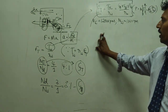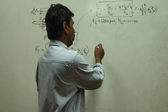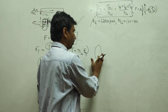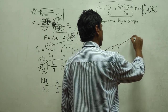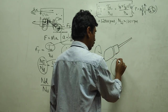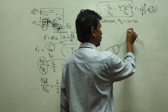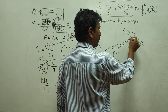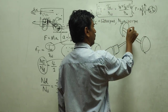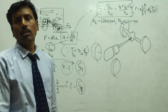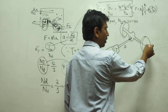Let me draw a driveline diagram. We have the engine, then the clutch, then the gearbox, then the driveline (drive shaft), and here is the differential. From the differential, one half shaft goes to one wheel and the other half shaft goes to the other wheel. This shows the complete driveline: engine → transmission → driveline → wheel system.